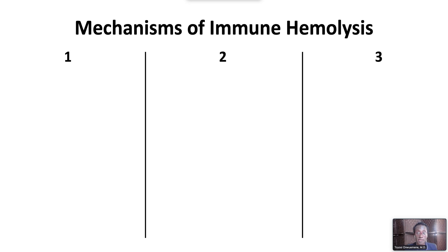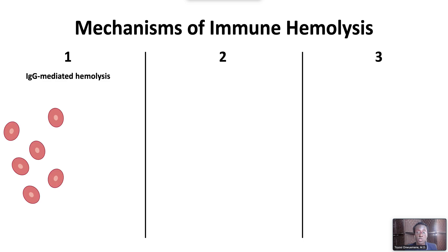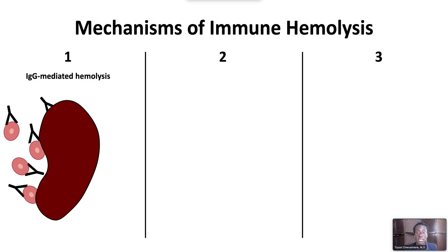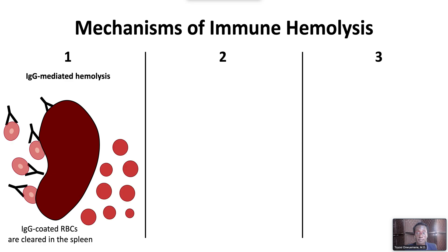There are three major mechanisms of immune-mediated hemolysis. The first is mediated by pathogenic IgG antibodies, which recognize and bind to RH-type antigens on the red blood cell surface. IgG-coated red blood cells are recognized and cleared from the circulation by macrophages in the spleen. Partial phagocytosis in the spleen with loss of red blood cell membrane forms peripheral blood spherocytes. IgG-mediated hemolysis is the primary mechanism of warm autoimmune hemolytic anemia.